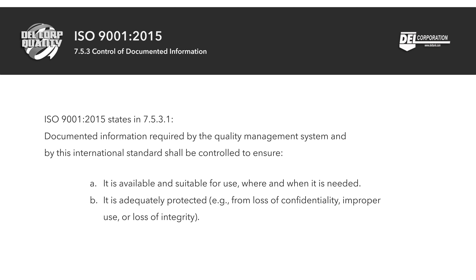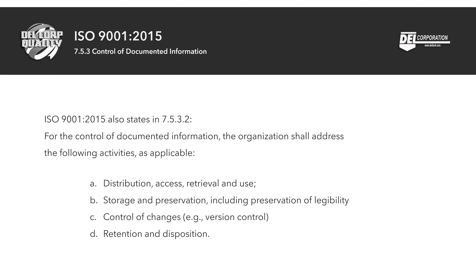Documented information shall be controlled to ensure: a) it is available and suitable for use where and when it is needed; and b) it is adequately protected — for example, from loss of confidentiality, improper use, or loss of integrity. ISO 9001:2015